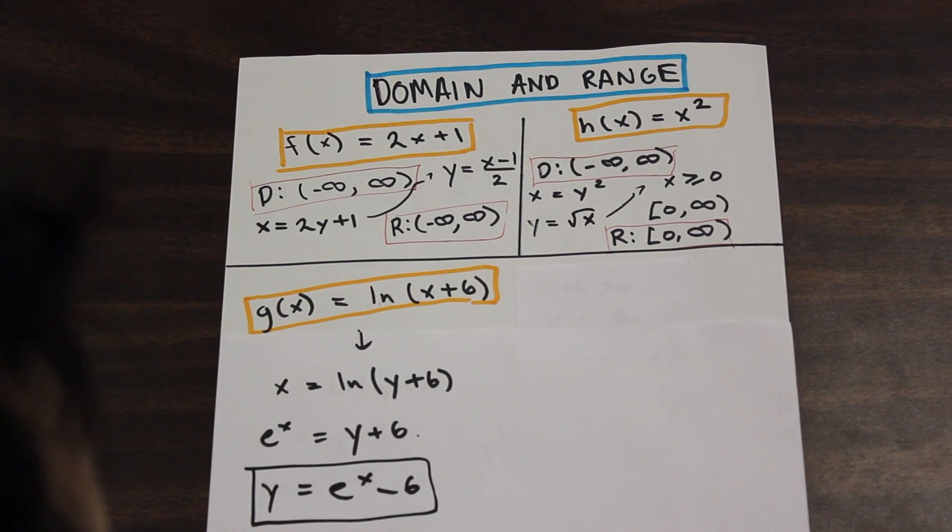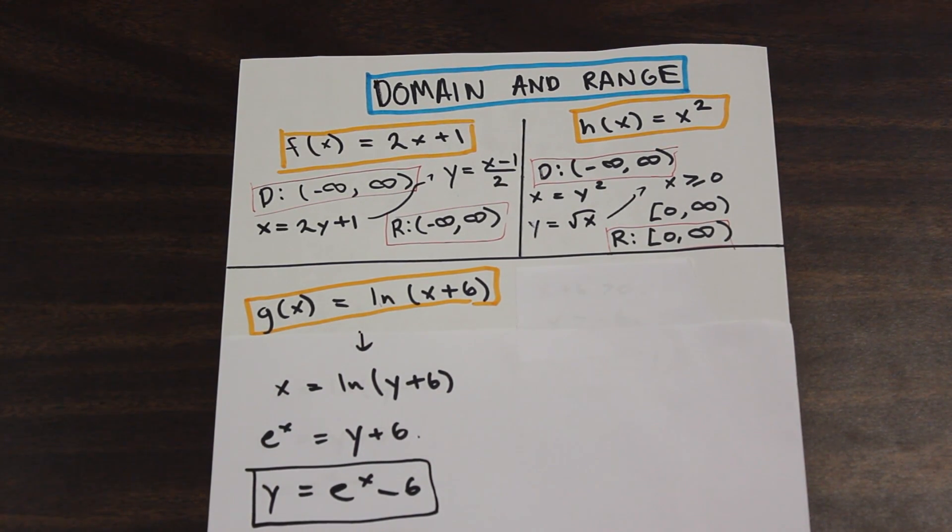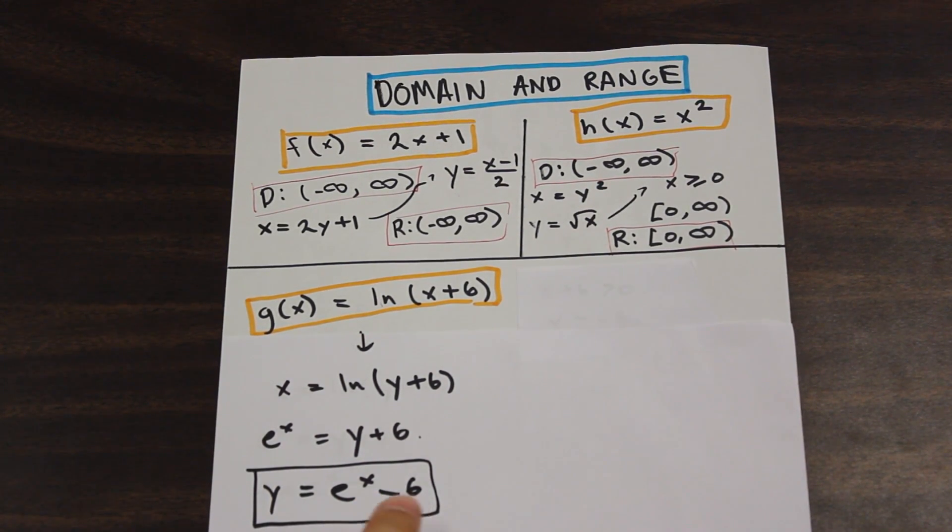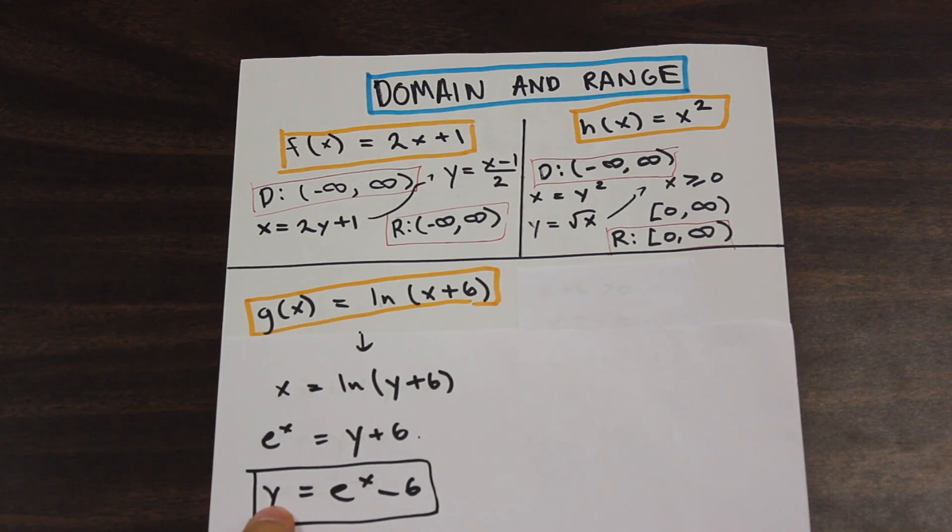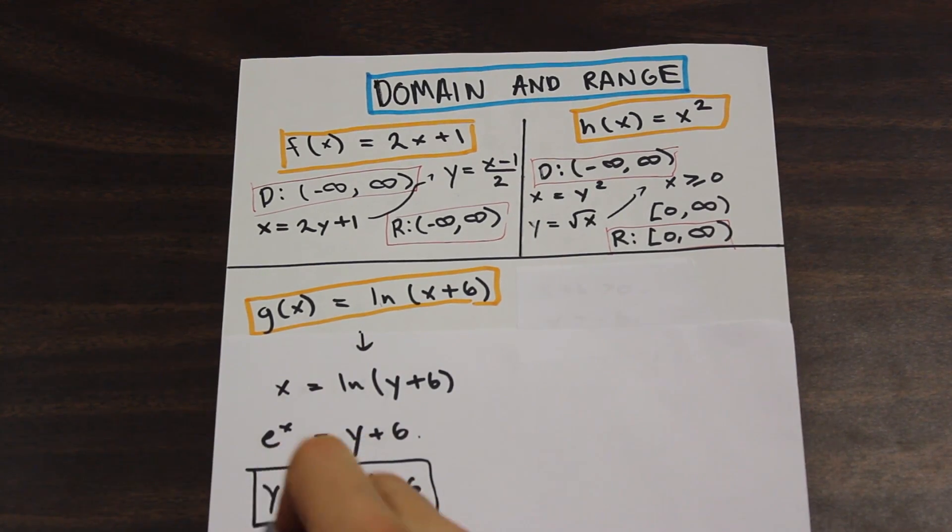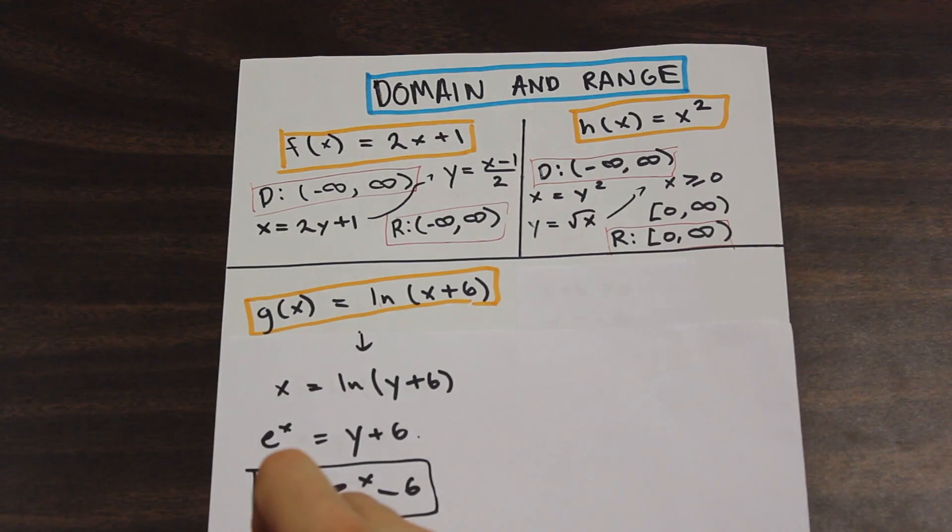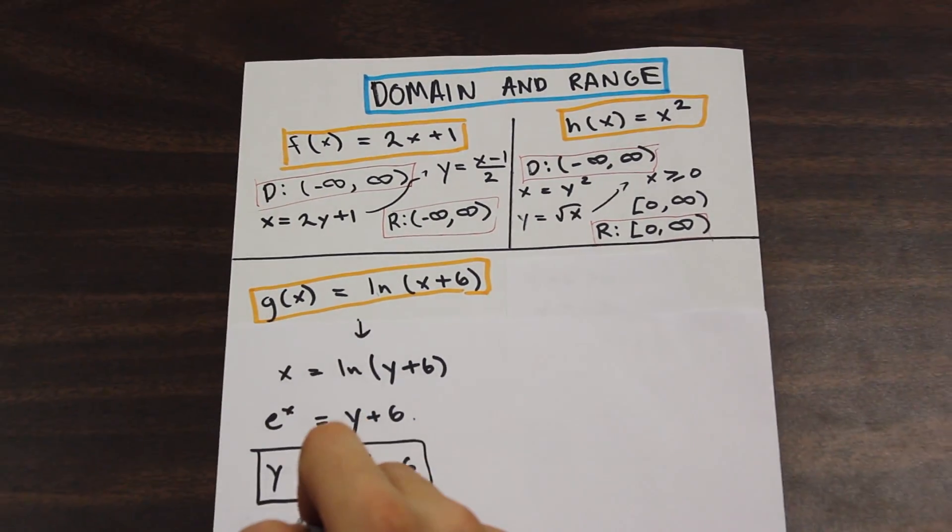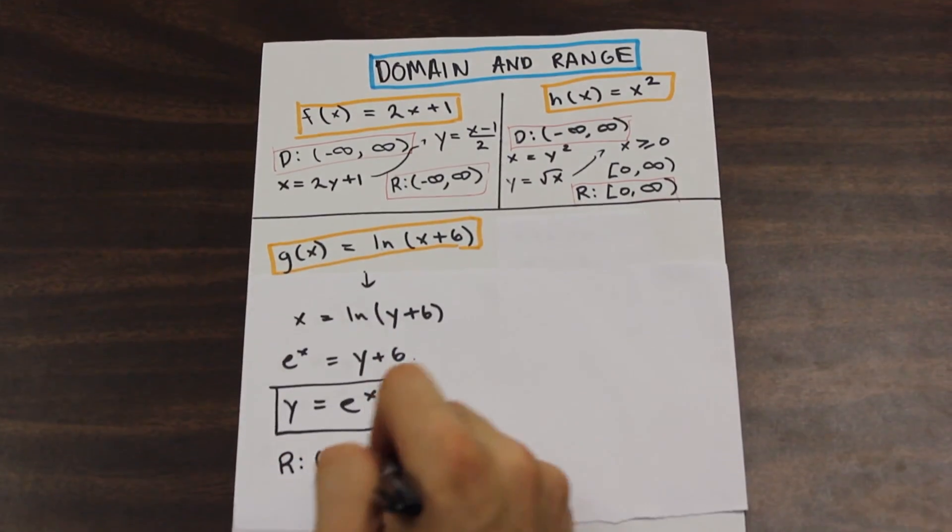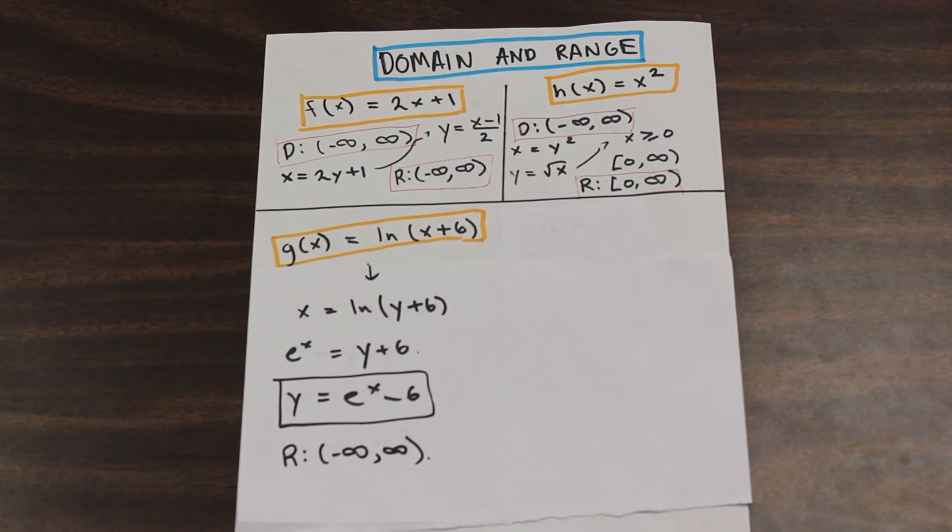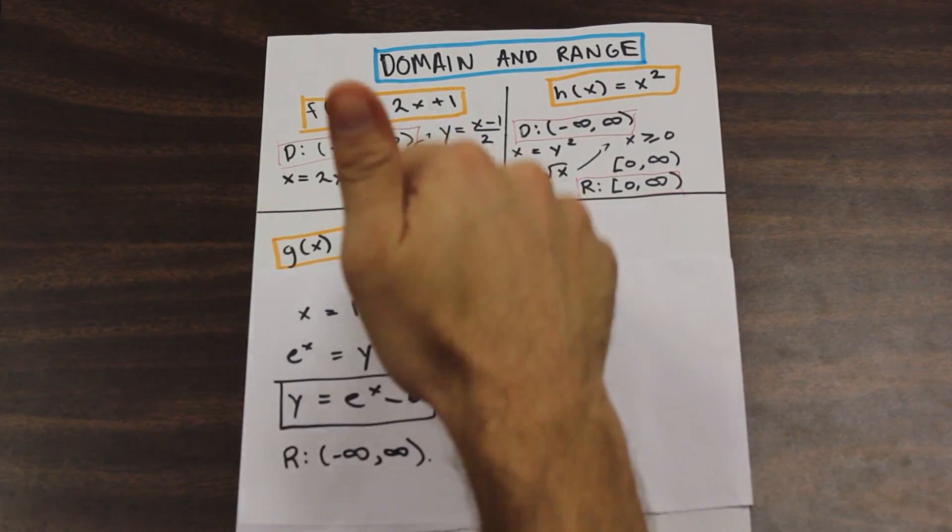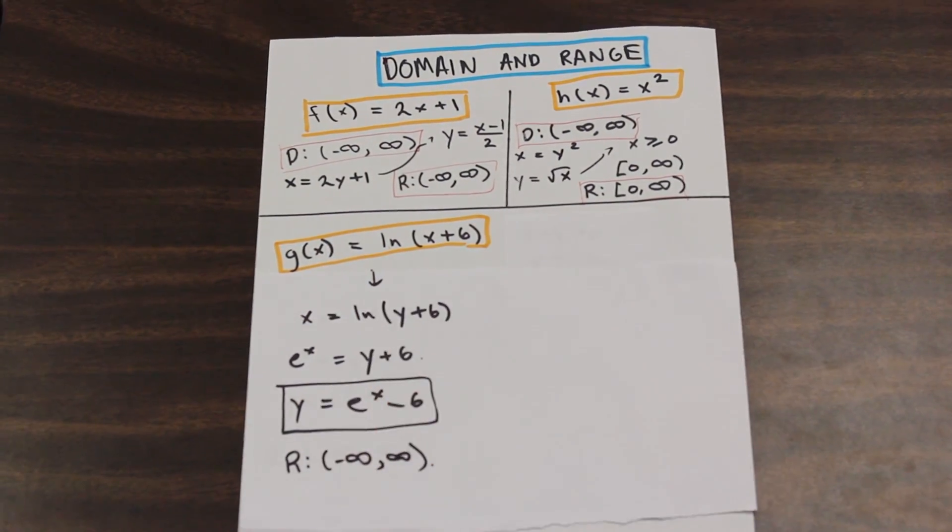And here we have it. So we have the inverse of the function, and if we take a look at that function, there's no real number that we can plug into X that won't give us a value of Y. So this function is defined for all real numbers. So the range of our function here is going to be negative infinity to infinity. And then we just did this one the other way around. We started with the range.